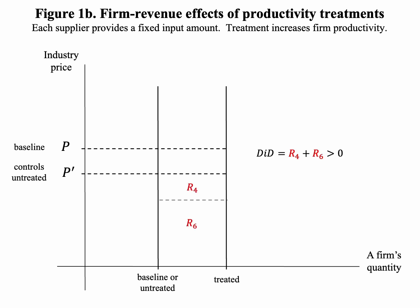It is also the difference in differences — more specifically, the difference between the average revenue change of the treated suppliers and the average change for those untreated, because the two types of suppliers have the same revenue in the baseline. Throughout this video, we refer to DID and treatment effect interchangeably. But that's not the effect of the treatment on the treated, because the treated lost the area R1 — and so did the controls. Therefore, the treatment effect on the treated, TOT, is strictly less than the DID. The TOT could have the opposite sign.